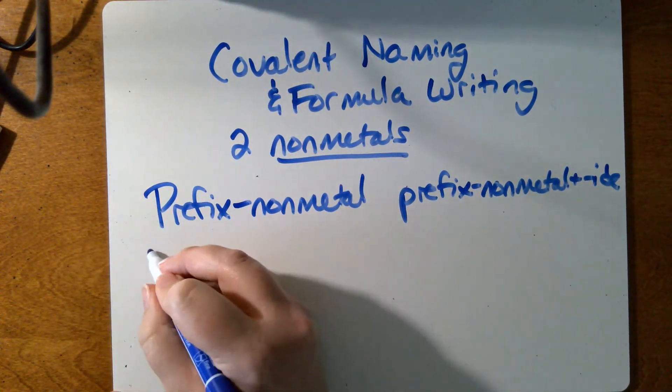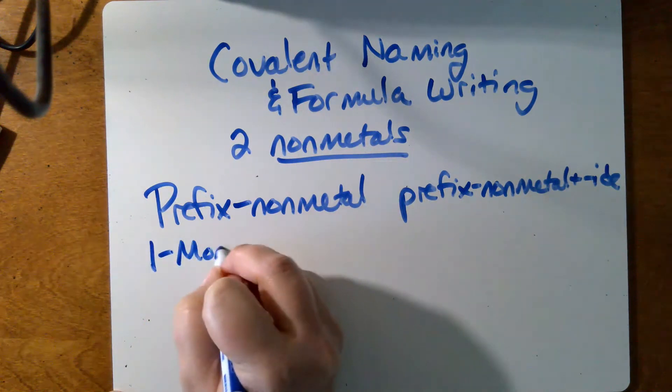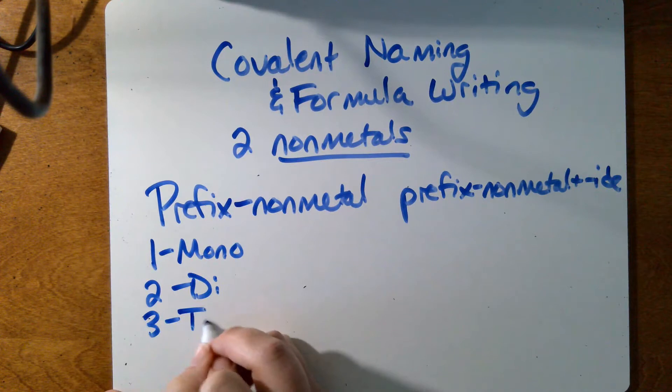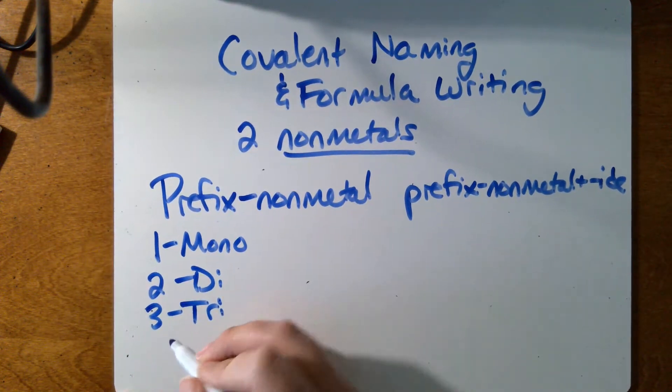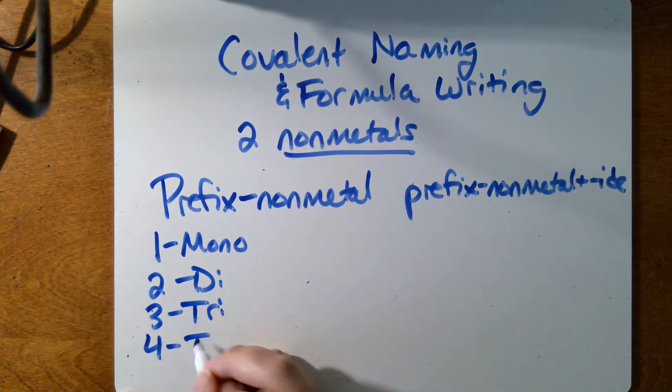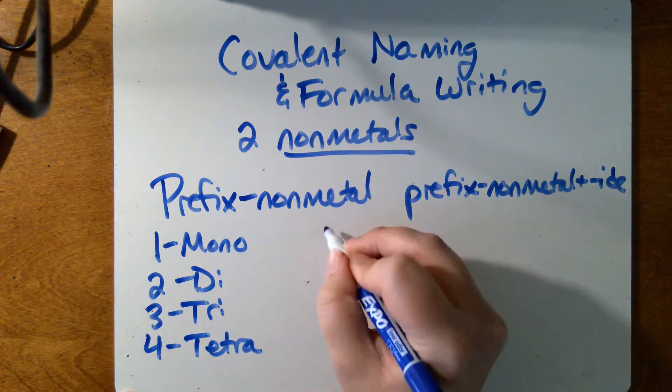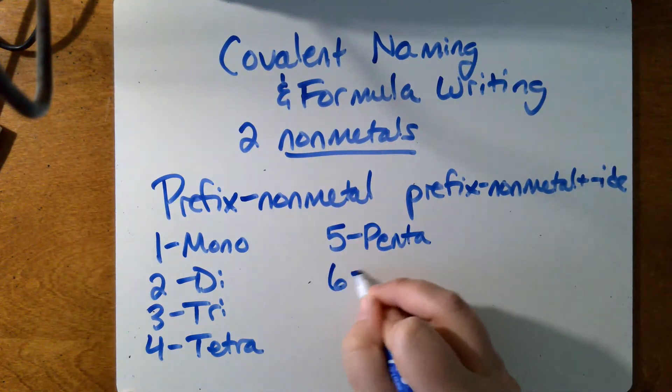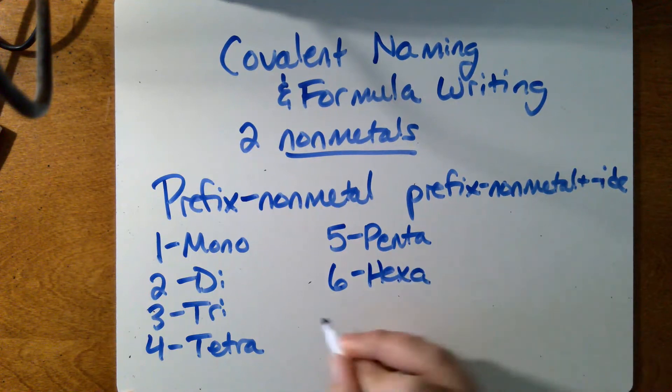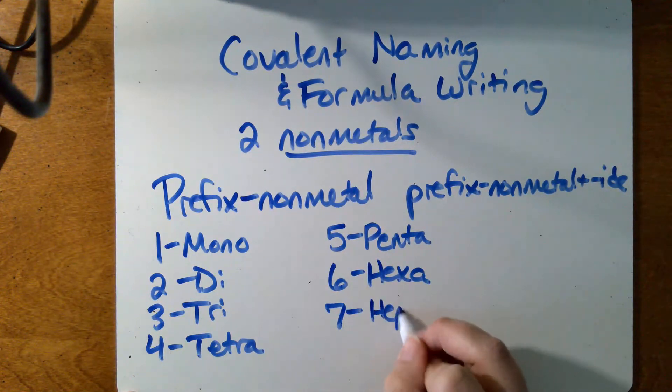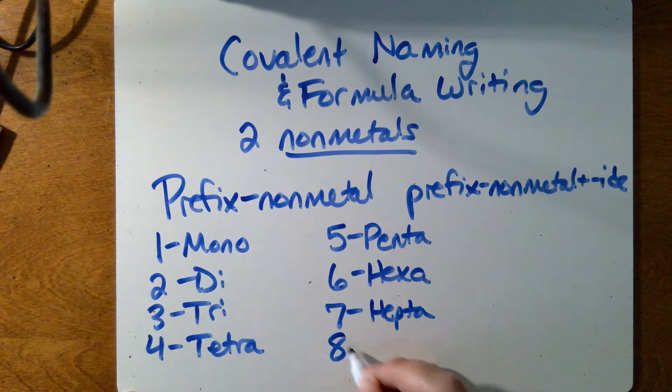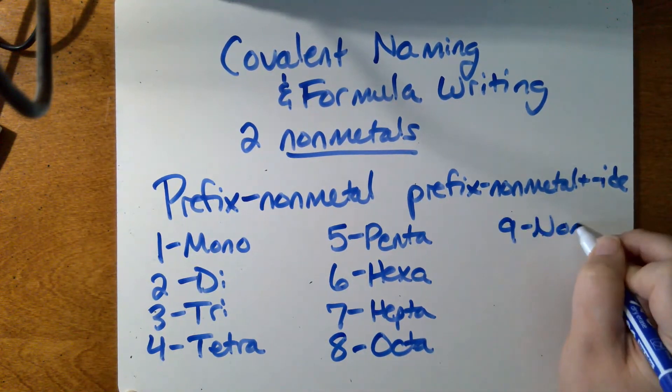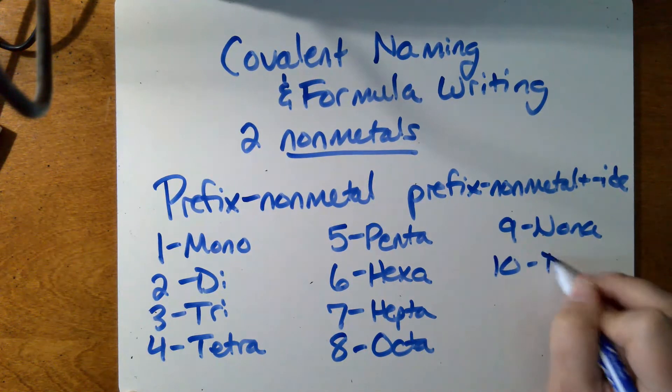So our prefixes: one is mono, two is di, three is tri like a triangle has three sides, four is tetra, five is penta, six is hexa like a hexagon, seven is hepta, that's a tricky one for people a lot of times, eight is octa, nine is nona, and ten is deca like a decade.